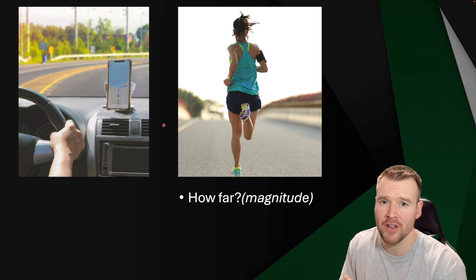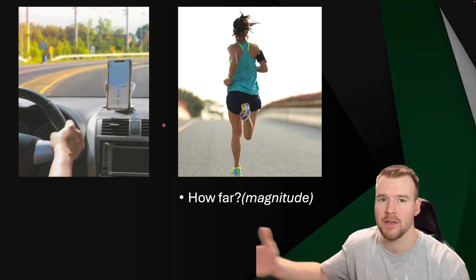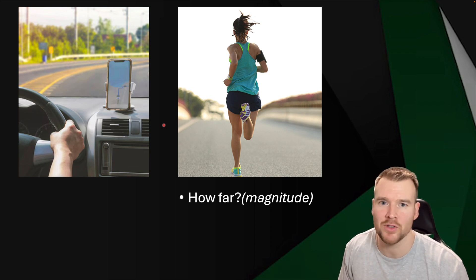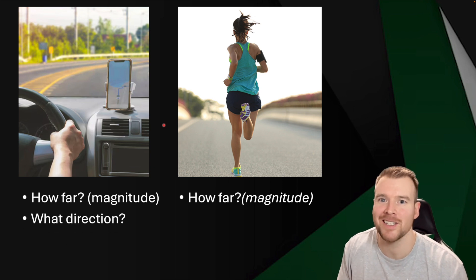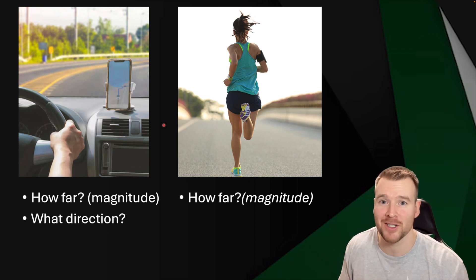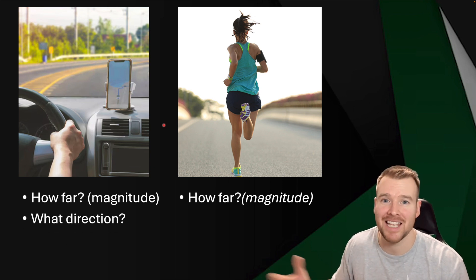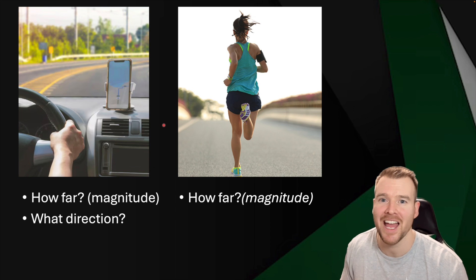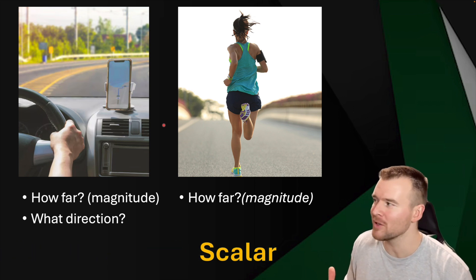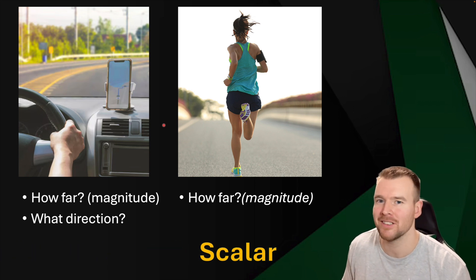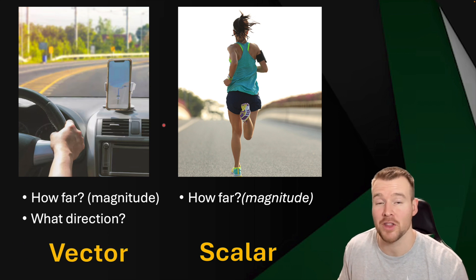If we're driving a car to meet someone at a restaurant 5.2 kilometers away, we need to know how far, but we also really need to know the direction. You can't just drive some distance in any direction and expect to get there. So a scalar is where we're not really worried about direction, and a vector is where direction is going to be important.